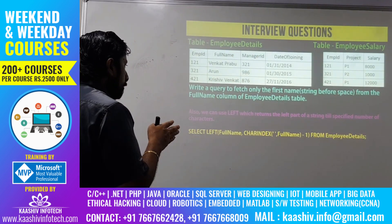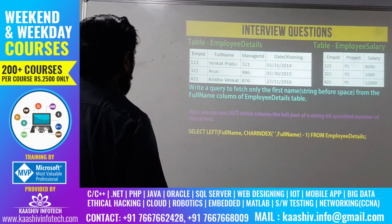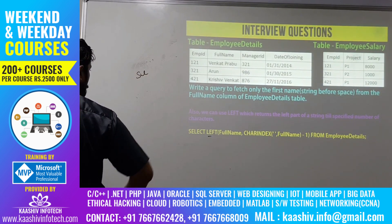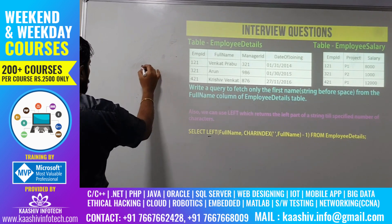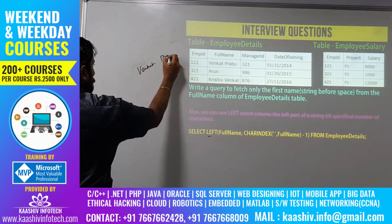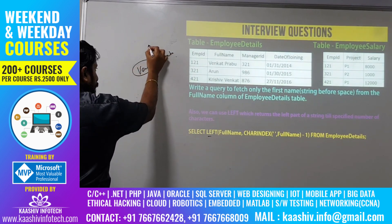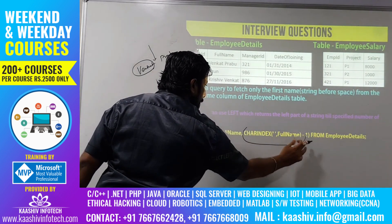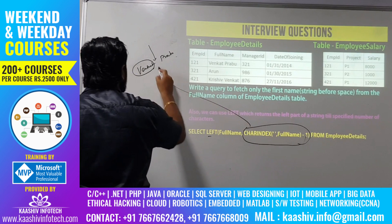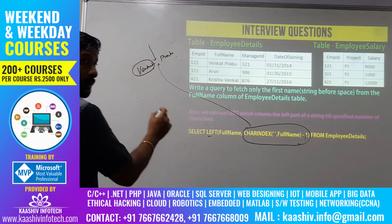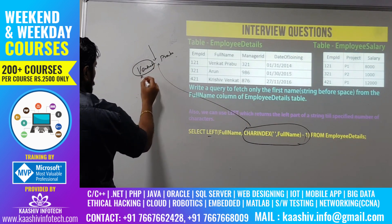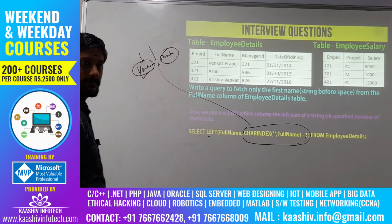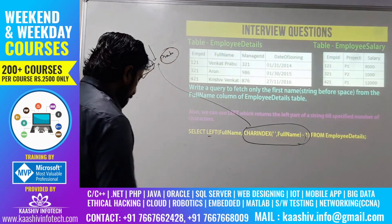An alternative way to extract the first name is using the LEFT function. LEFT(full_name, CHARINDEX(' ', full_name) - 1) will return everything to the left of the space — giving 'Venkat'. Similarly, RIGHT would give the last name. This is another valid way to write that query.